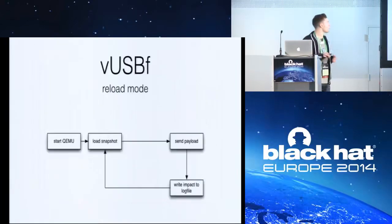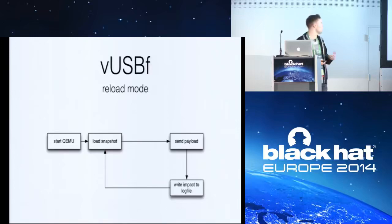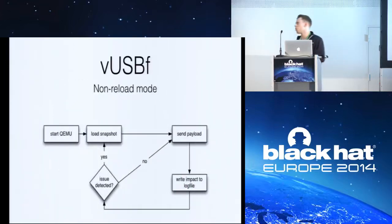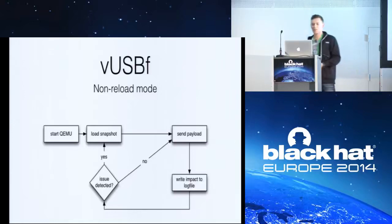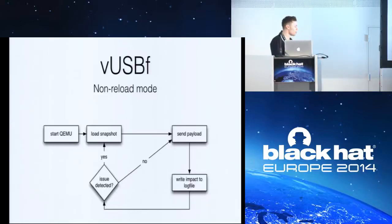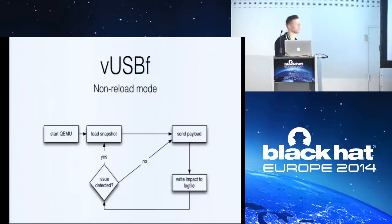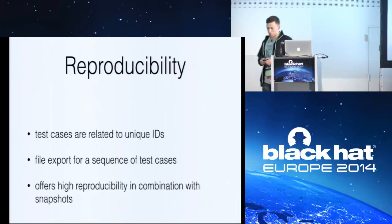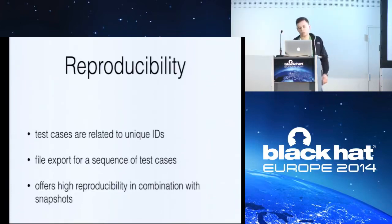We have two modes implemented in this framework. The first is the reload mode — with this mode you can test individual payloads, and after sending each payload there is a restore of the virtual system. The second mode is more like the FaceDancer or real world: you keep sending until there is a crash and something goes terribly wrong, and only then do you restore the system. This allows us to find very interesting sequences of payloads which trigger bugs. This mode is also faster, and since every test case has its own identification number, you can export sequences of them to files, import them, execute them, distribute them — and we'll show their reproducibility in the demo.